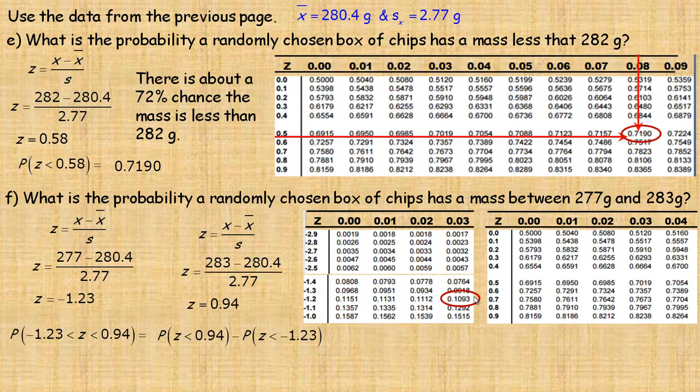So there's the -1.23. I've got a portion of the standard table here. And then we want 0.94, 0.9, and then 4 is over here. So those are the two probabilities that we're subtracting. 0.8264 minus 0.1093, which is 0.7171.